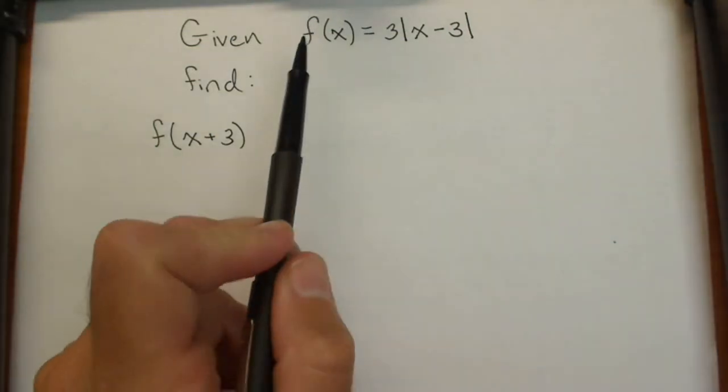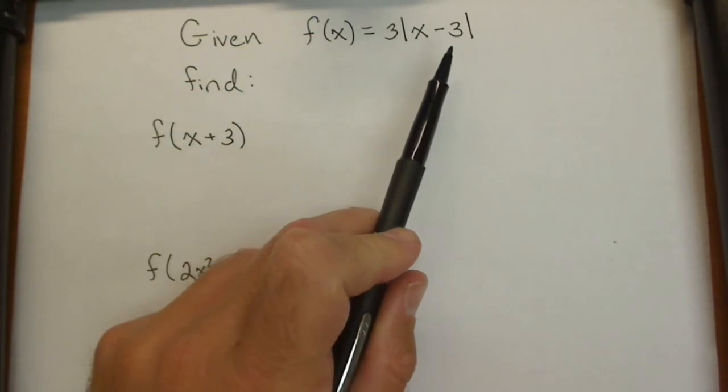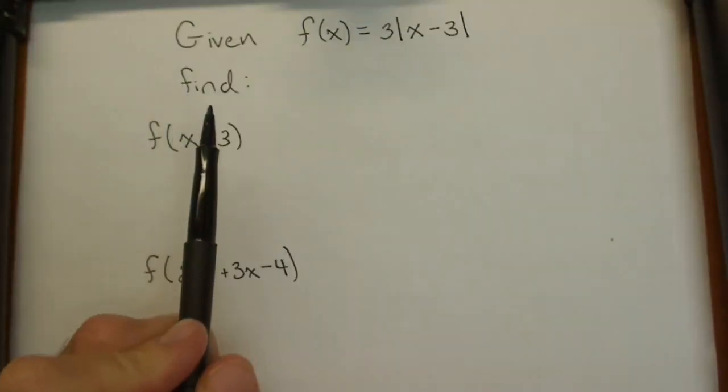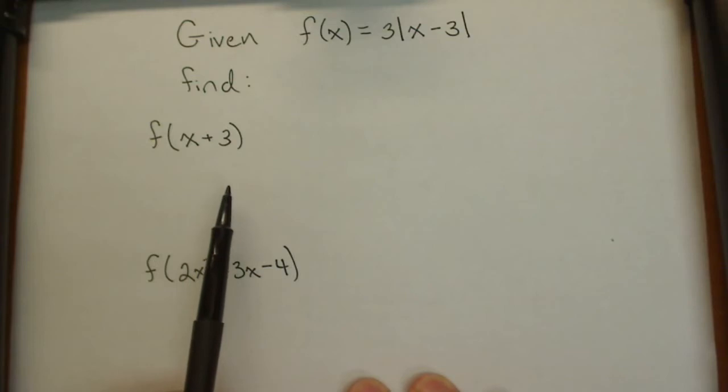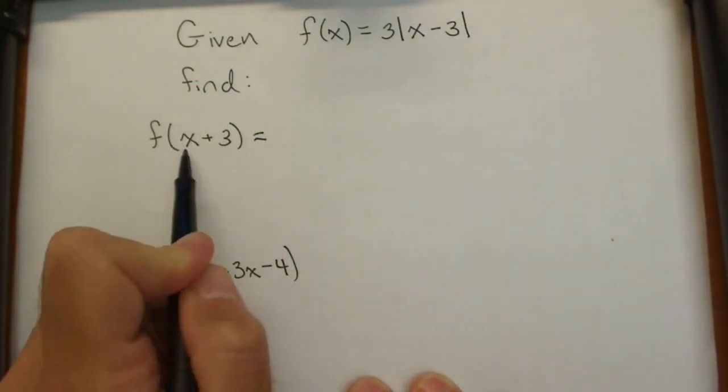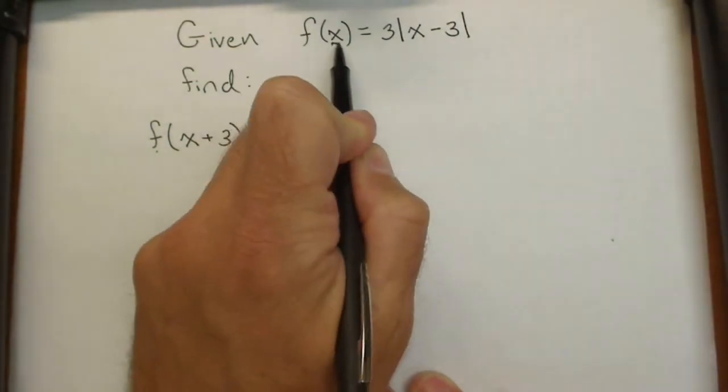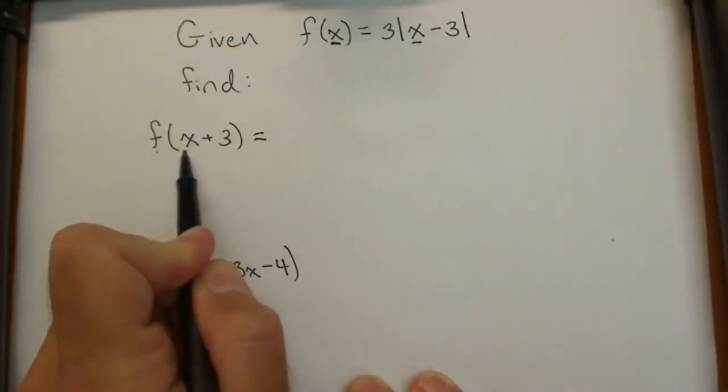In this problem, given the function f(x) equals three times the absolute value of x minus three, we're being asked to find f(x+3). When we're doing that, x+3 is going to be the input to our function f. Any place there's an x in f, we're going to replace it with x+3.